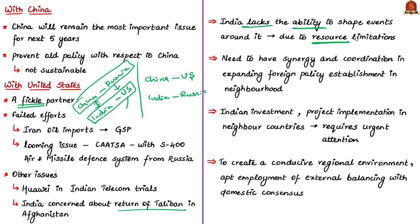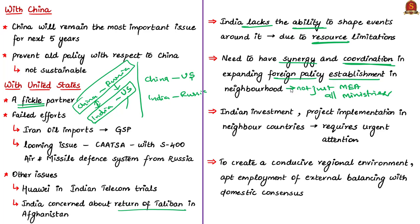Whether comparing India or China with respect to investments or lines of credit to neighbor countries, India is certainly lagging. India should take credible steps to help neighbor countries, and needs synergized action and coordination in expanding its foreign policy establishment in the neighborhood. This means when a specific effort is taken in a neighboring country, it is not just the Ministry of External Affairs — there should be synergy and collective coordination of all relevant ministries. For example, if a project involves agriculture, the Ministry of Agriculture has to be involved along with relevant industries and other stakeholders.